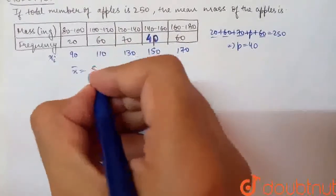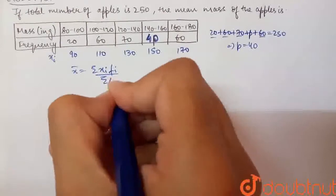Now, the mean is basically summation Xi Fi over summation Fi.